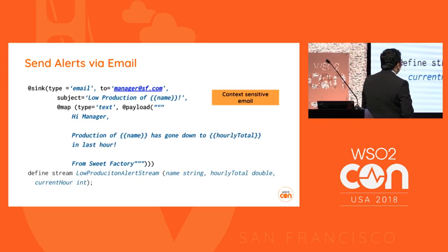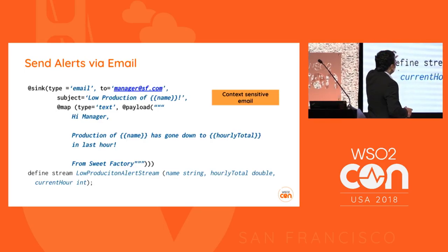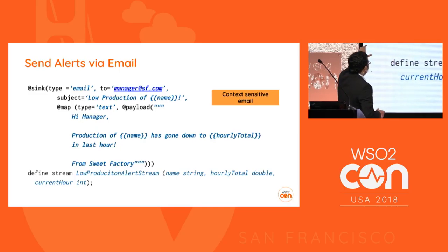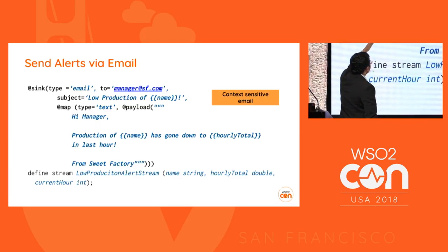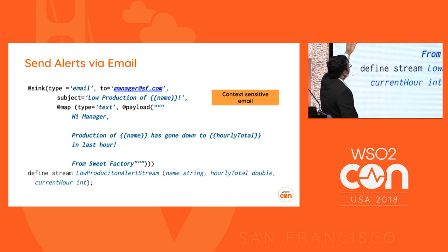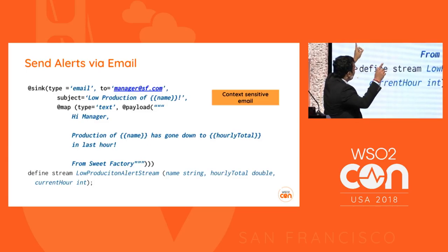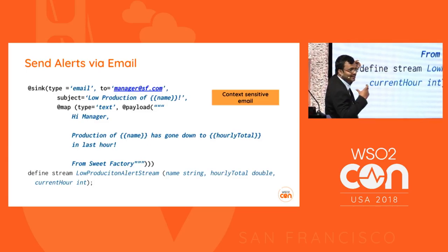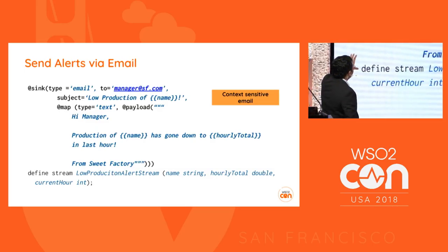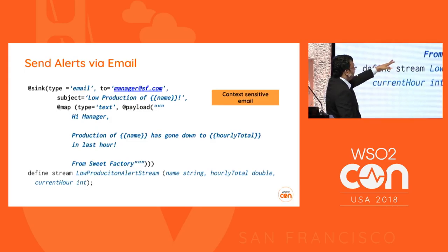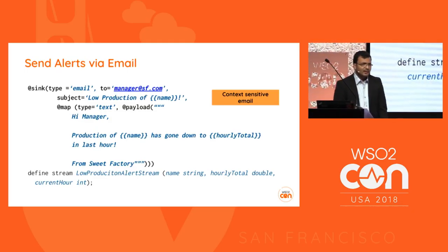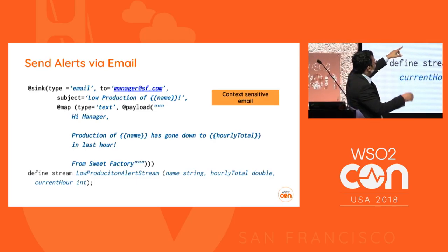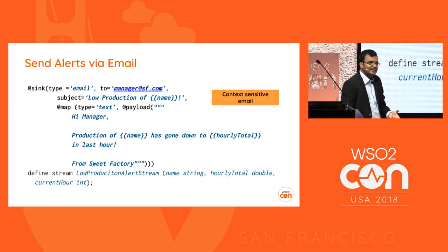Since we want to send an email, we attach an email sink to that specific stream. The query has the email address in a 'to' field, a subject like 'Low production of {name}', type is text since it's an email, and the body says 'Hi manager, production of {name} has gone down to {hourly_total} in the last hour.' The curly braces are replaced by actual event data values to create proper email content. HTML bodies are also supported.